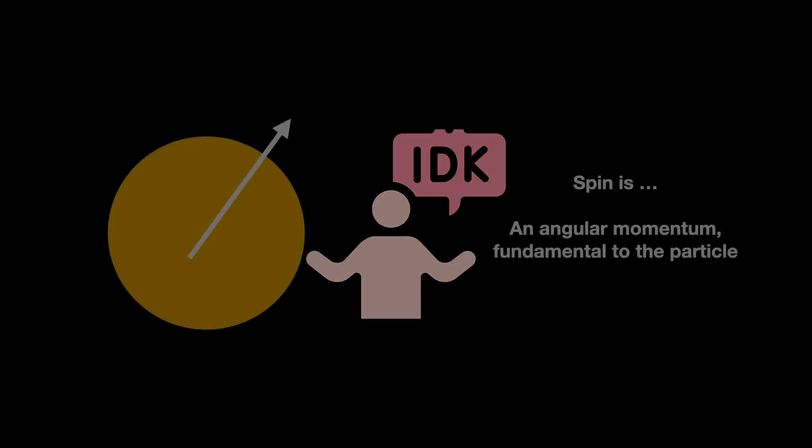One, it is an angular momentum, fundamental to the particle. And there are experiments proving that it exists. Two, it is quantized, meaning that it is measured in discrete values without a unit. One, one point five, two, etc. Three, again, it is not the spinning top.